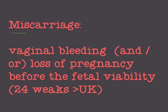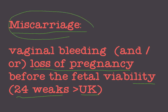What is miscarriage? Miscarriage is any vaginal bleeding and/or loss of a pregnancy before fetal viability. If a pregnant woman has vaginal bleeding or loss of pregnancy before the age of viability of the fetus — which is 24 weeks in the UK and 28 weeks in some Middle Eastern countries — this is what we call miscarriage. By the way, miscarriage used to be called abortion, but nowadays it is called miscarriage.